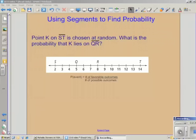Okay, let's practice using segments to find probability. Point K on segment ST is chosen at random. What is the probability that K lies on segment QR? Let's work it out.